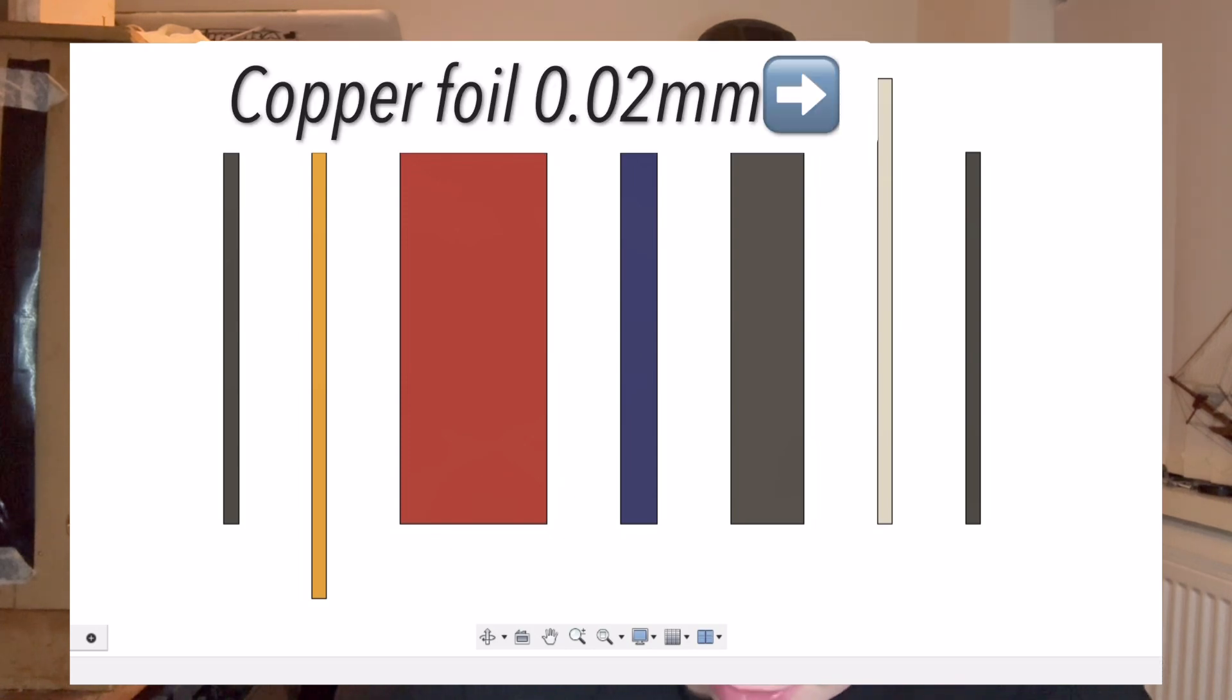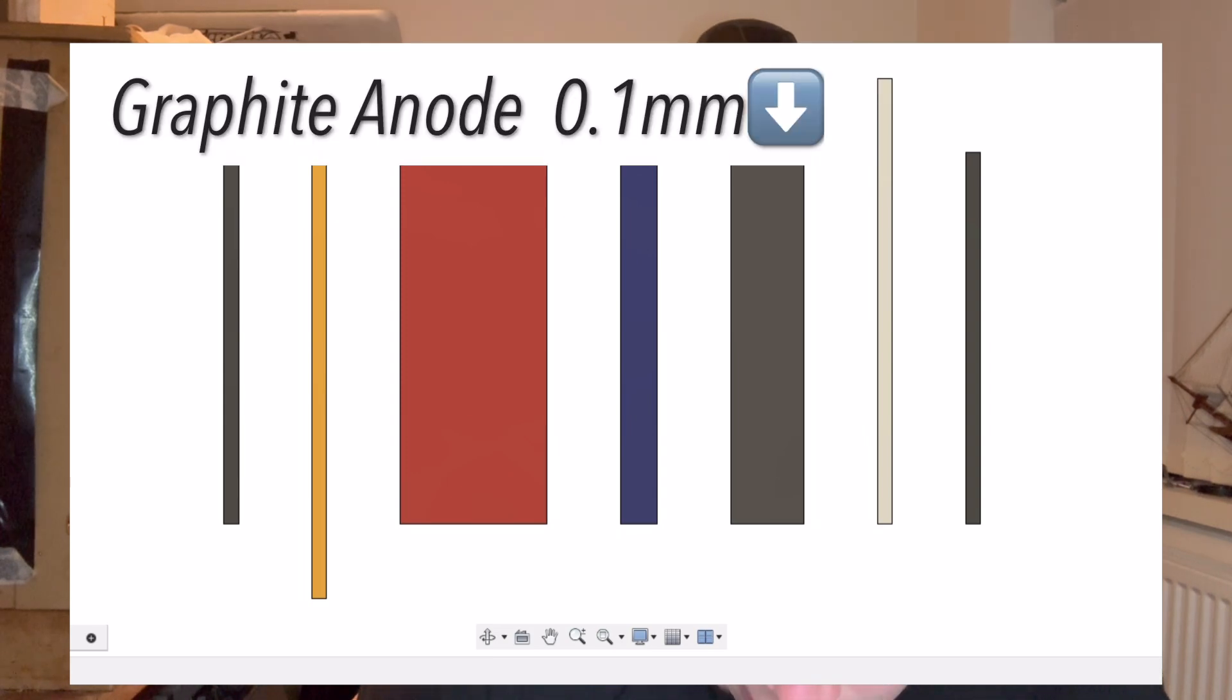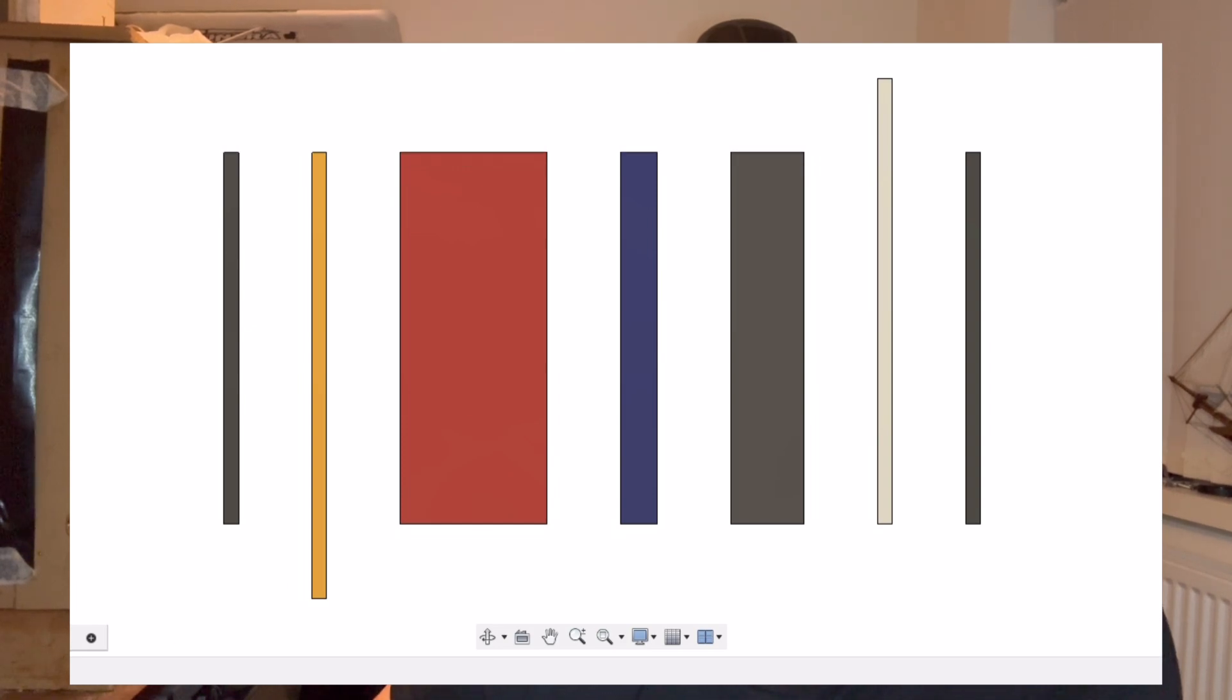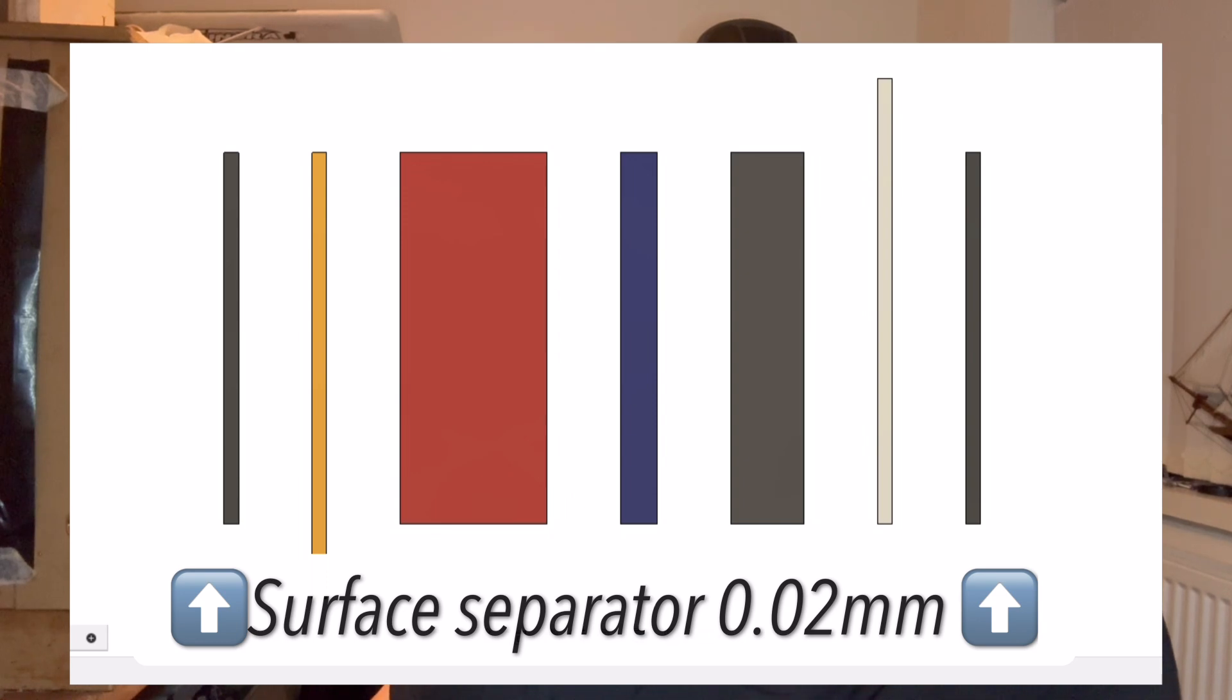Then we go to the other side and you have your negative terminal, your other current collector, which again is around 20 to 50 micrometers. On top of that you have the anode layered, which is typically graphite and around 100 micrometers. These are all then sandwiched together.